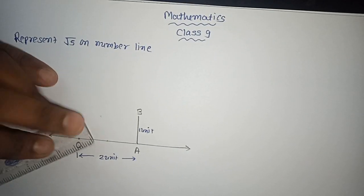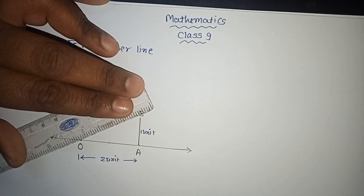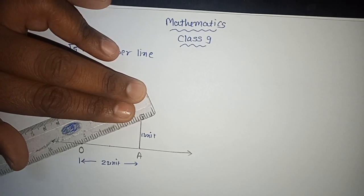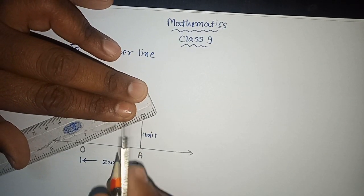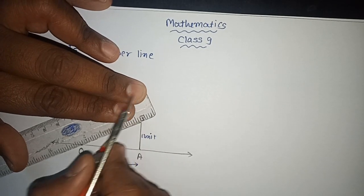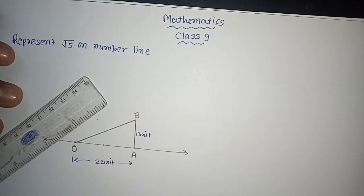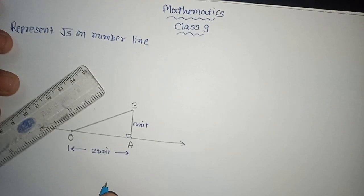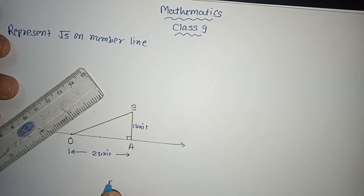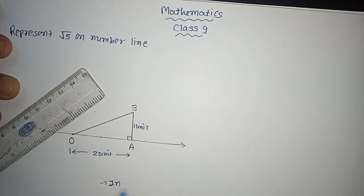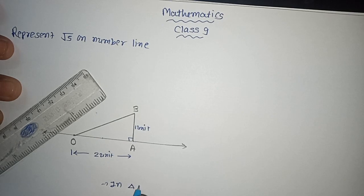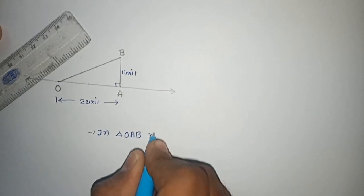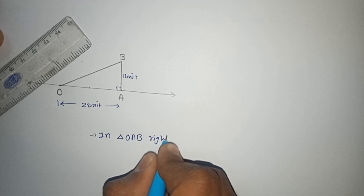Now let us connect OB. As per the Pythagoras theorem, since AB is perpendicular, in triangle OAB it is a right triangle.